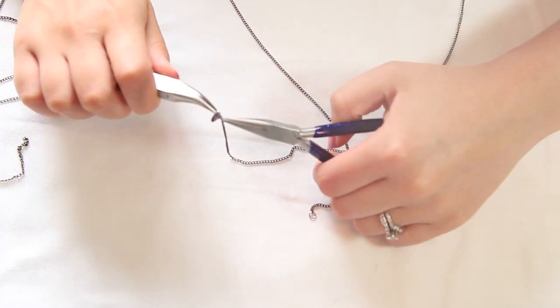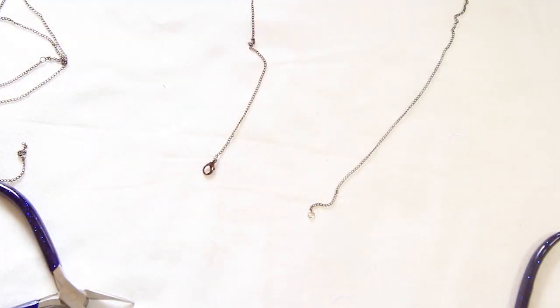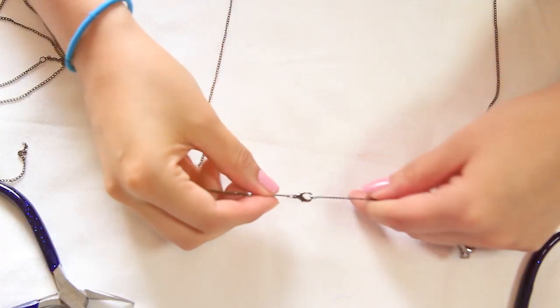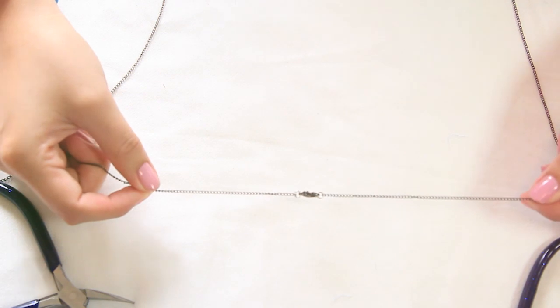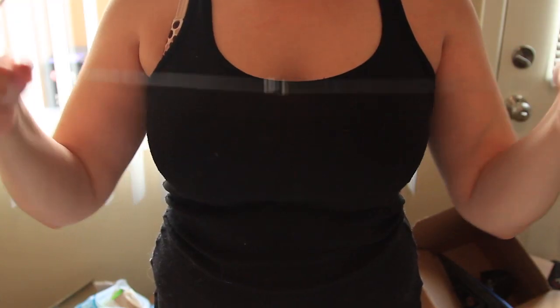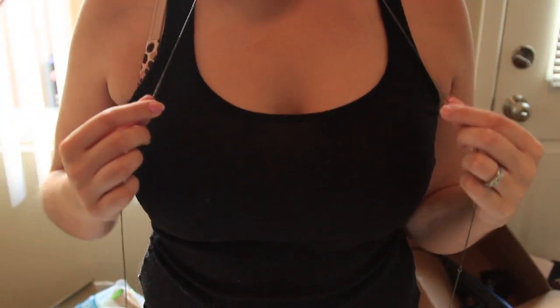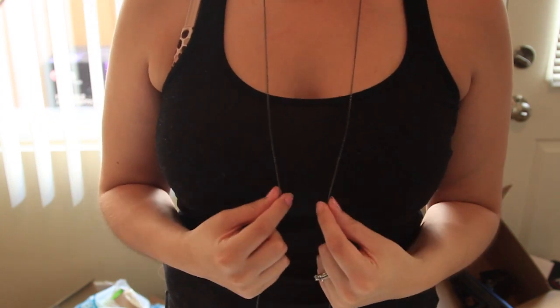Now you should have a jump ring and a clamp at each end. Go ahead and just connect them and close it because it's easier to work with. Now place it over your neck like a really long necklace and measure where you want the two chains to meet. Then take it off and use a placeholder so you don't lose that spot.